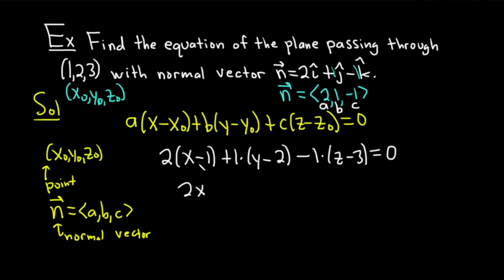We are going to get 2x - 2. And then here we just get y - 2. Distributing the -1 here is going to give us -z and a +3. Usually people clean up their answers. I suppose you could leave it at the previous step, but it's not something people usually do.